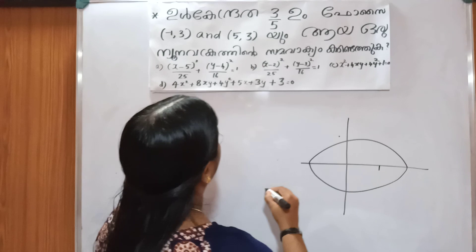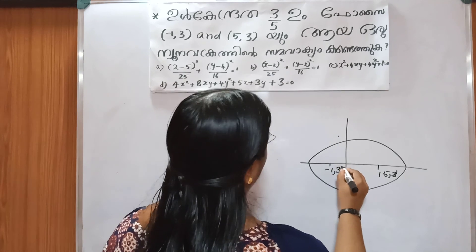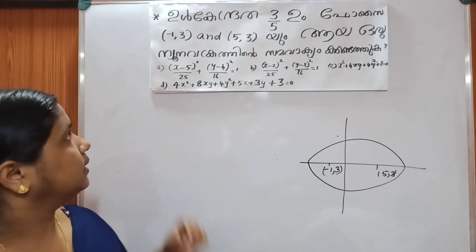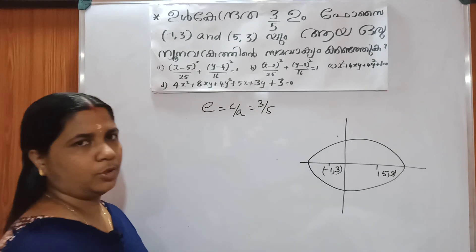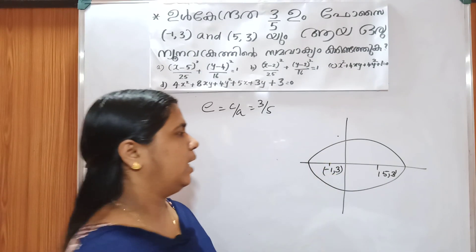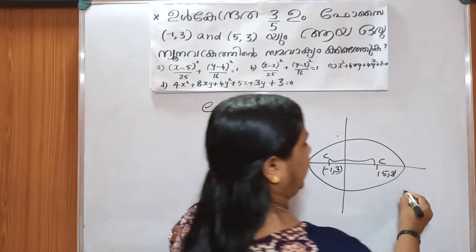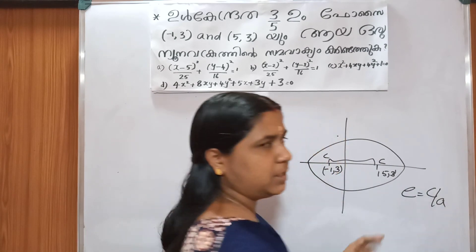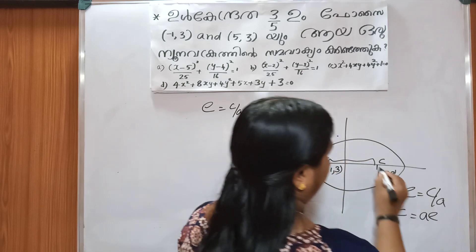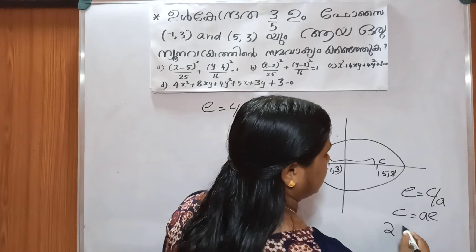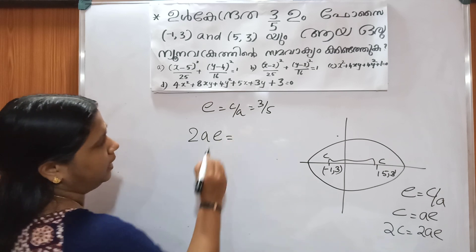The focus is minus 1, 3. E is equal to c by a, that is 3 by 5. This distance is c. Eccentricity is equal to c by a. C is equal to ae. This distance is c. 2c is equal to 2ae.